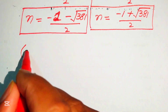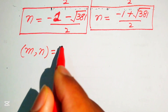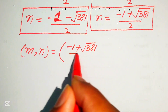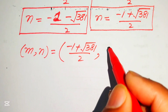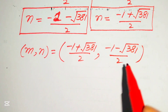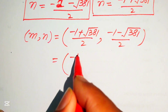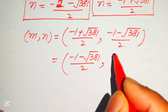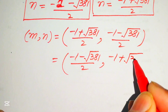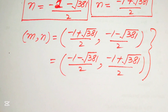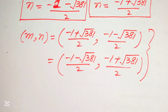Finally, the two solution sets are: first, (m, n) = ((-1 + √381)/2, (-1 - √381)/2); and second, (m, n) = ((-1 - √381)/2, (-1 + √381)/2). These are the two solution sets of the given system of equations. Thank you for watching — please subscribe to my channel for more videos.